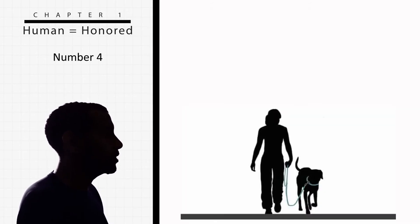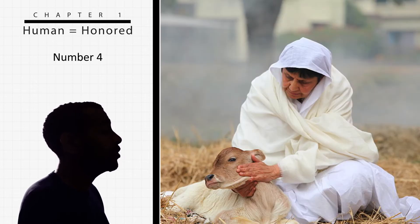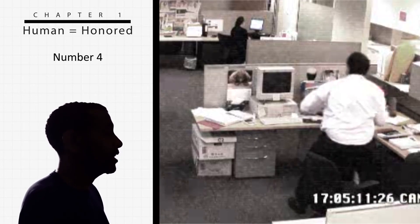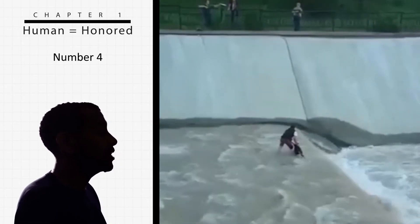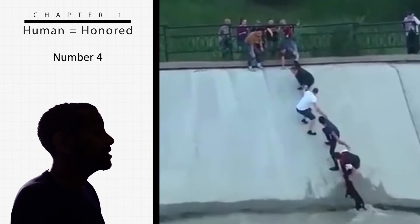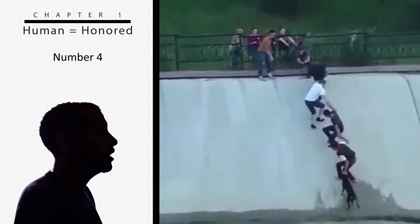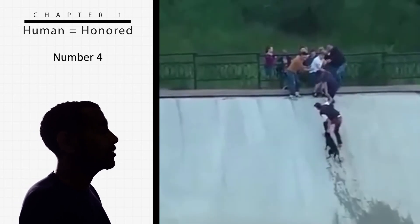Because we have the potential to be more honorable than angels or worse than animals. It's all determined by our choices. But the ability of intellect and choice on its own is why God asked angels to bow down to Prophet Adam, which is basically to bow down to all of us out of respect.